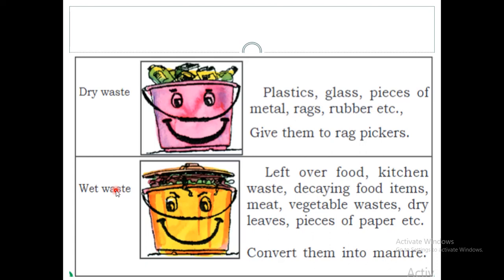Dry waste — examples of dry waste are plastics, glass, pieces of metals, rags meaning old clothes, rubber, etc. These dry waste items can be given to rag pickers, who collect old clothes and recyclable materials.